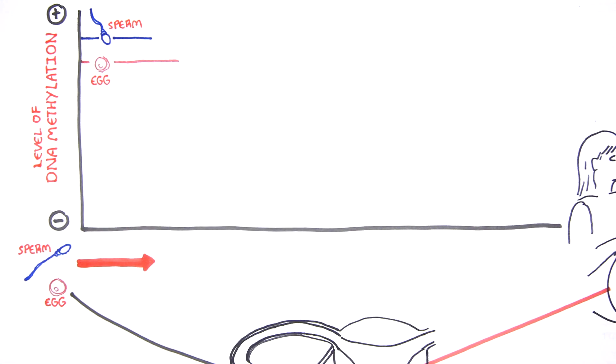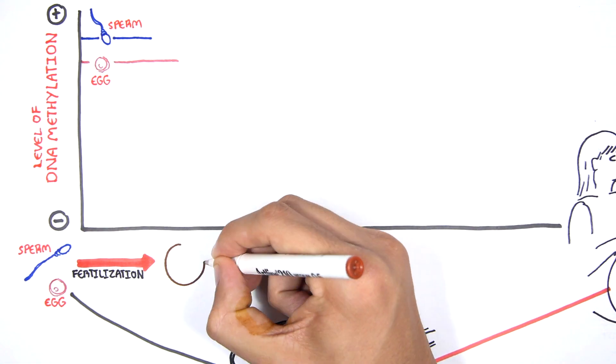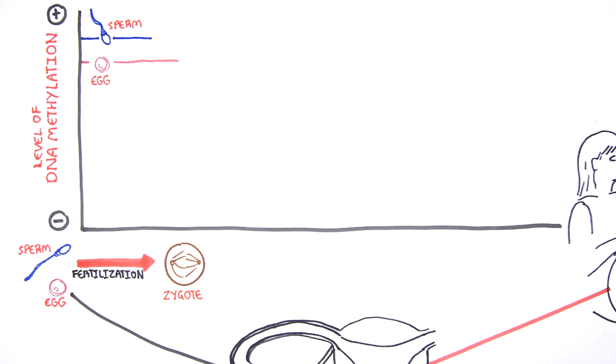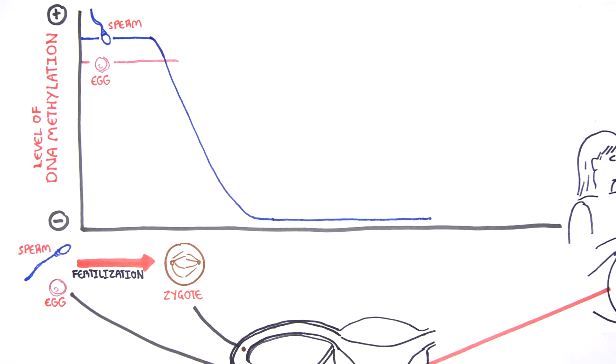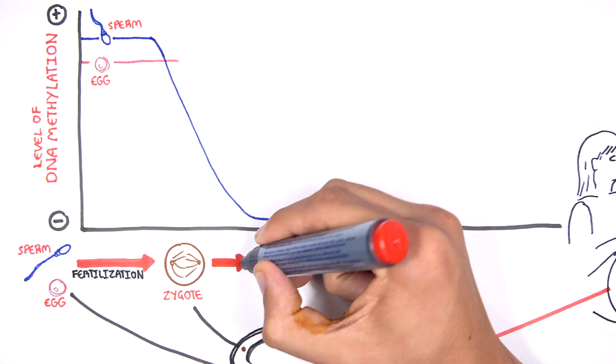During fertilization, a zygote is formed and the maternal and paternal genome and epigenome are contained in one cell. The paternal epigenome then rapidly undergoes genome-wide active DNA demethylation and remains demethylated following multiple rounds of cell division.